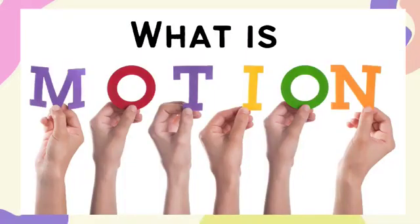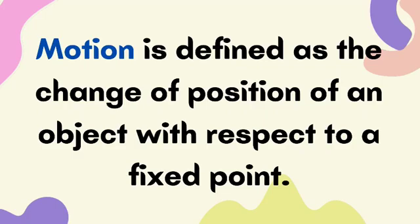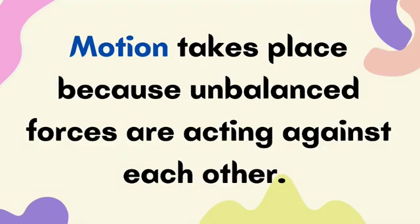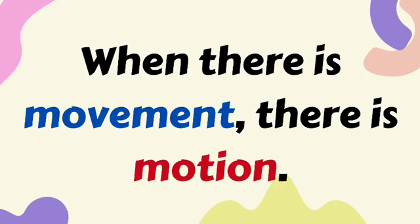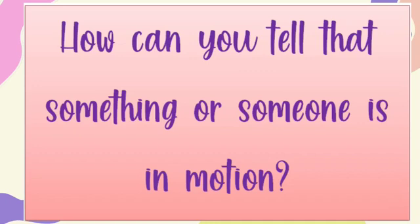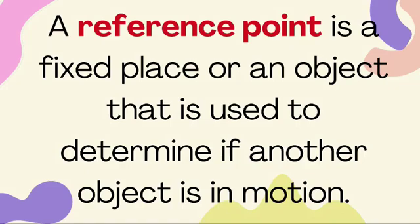The force applied by the two groups creates motion. But what is motion? Motion is defined as the change of position of an object with respect to a fixed point. It takes place because there are unbalanced forces acting against each other. When there is movement, there is motion. How can you tell that something or someone is in motion? It has something to do with comparing it to another object or place, known as the fixed point or the reference point. A reference point is a fixed place or an object that is used to determine if another object is in motion.